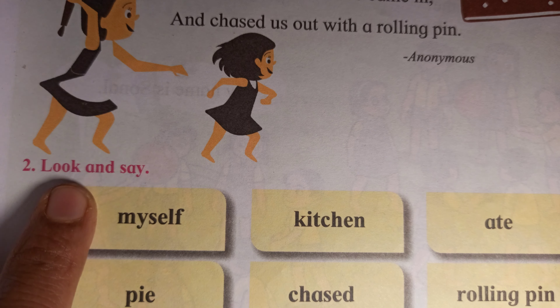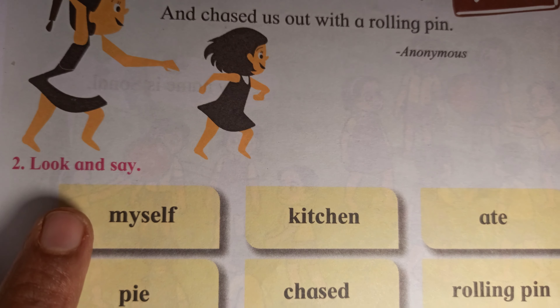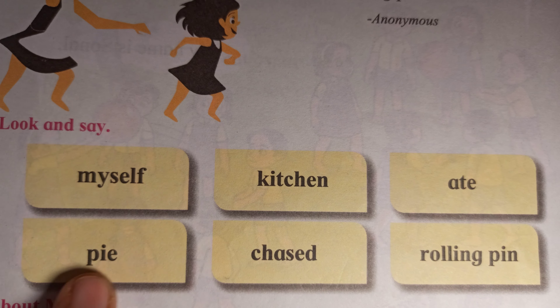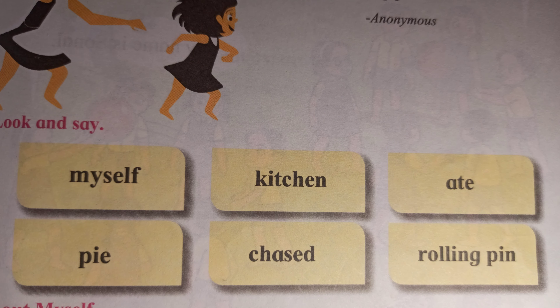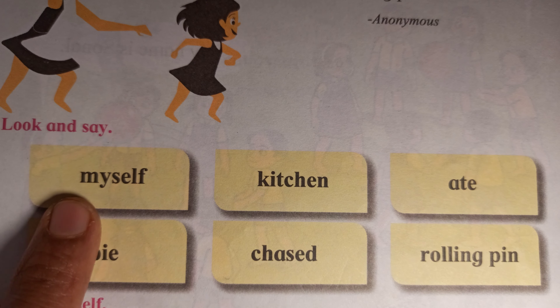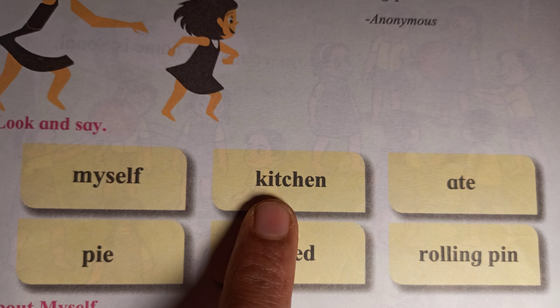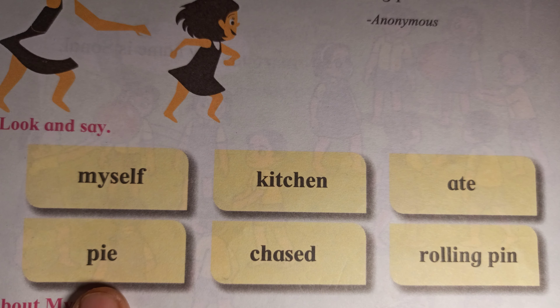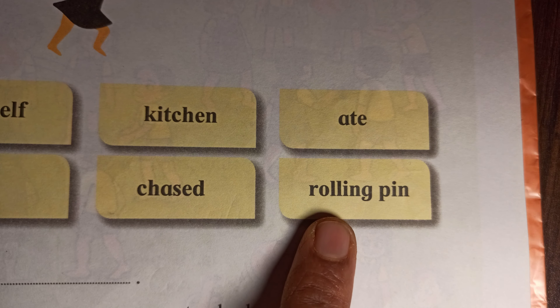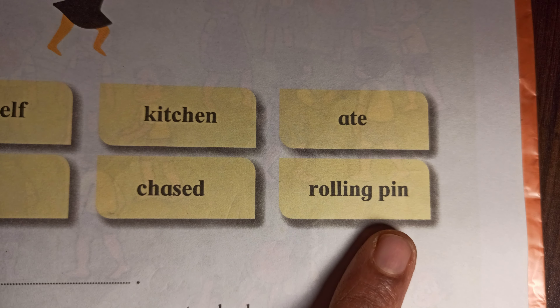The second activity is Look and Say. My dear little friends, please write all the words in your English textbook three times so you can easily give answers. These are new words for you: Myself, Kitchen, ate, Pie — pie means something like chocolate pie. Then Chase, Rolling Pin, which your mother uses when making chapati.